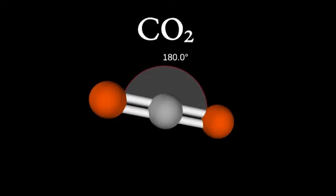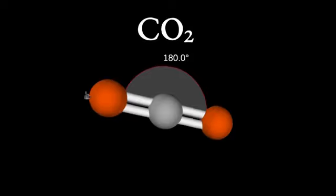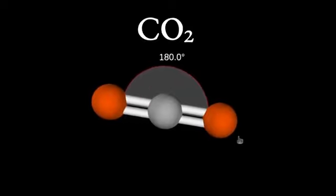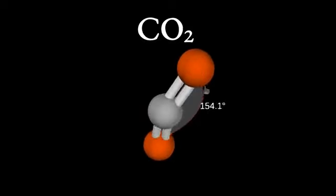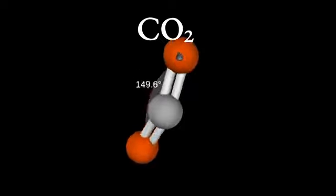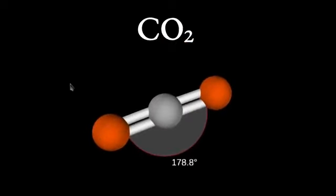The energy minimization can give also the full geometry of a molecule, in particular the angles, like here for the case of carbon dioxide. You see how the energy minimization predicts a linear molecule with a flat angle between the two oxygens.